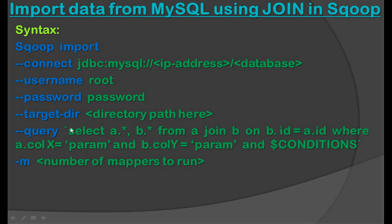As you have seen, in Scoop we need to add the dollar conditions. After that we can put the number of mappers — how many mappers we want to run with this syntax. So this is the syntax for join in Scoop.